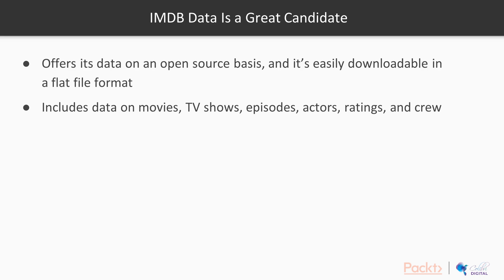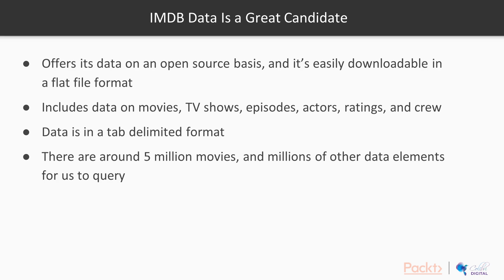As part of this free dataset, it includes data on movies, TV shows, episodes, actors, ratings, and crew including directors and lighting engineers. The data is in a tab-delimited format — just like a CSV file, but with a tab as the separator instead of a comma. IMDB has around 5 million movies and then millions of other data elements. If there are 5 million movies, the number of actors, cast, crew, and directors is almost an order of magnitude bigger than that.